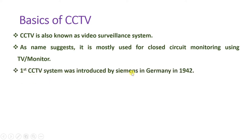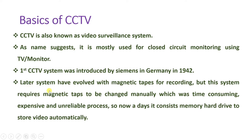The first CCTV system was introduced by Siemens in Germany in 1942. Later, technology evolved and magnetic tape was used for recording. However, in that system you needed to change the magnetic tape manually, which was a time-consuming, expensive, and unreliable process. So that system eventually failed. Nowadays, CCTV systems use a memory hard drive to store video automatically.